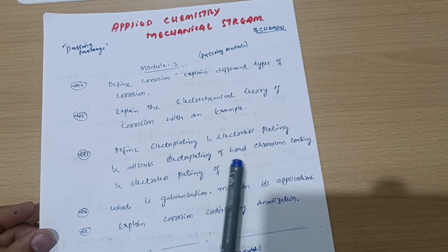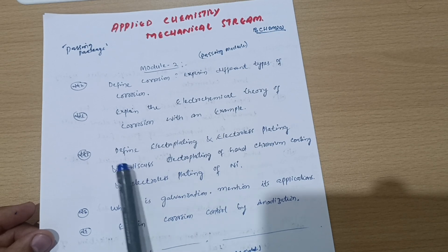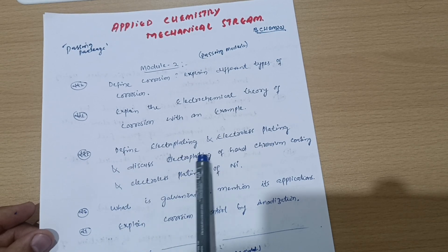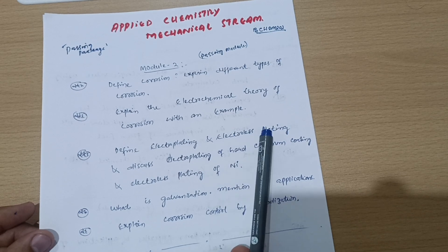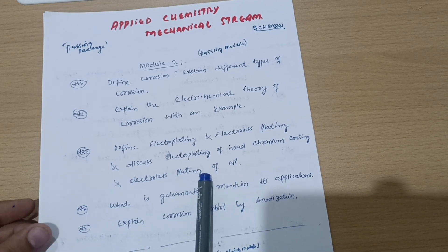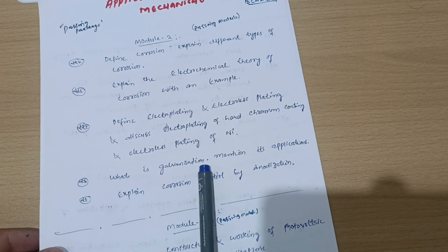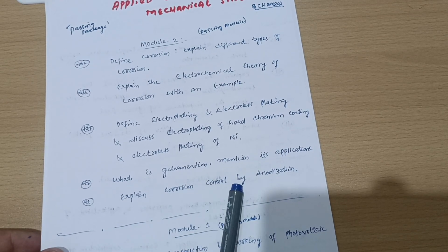Define electroplating and electroless plating and discuss electroplating of hard chromium coating and electroless plating of nickel. This may be a separate question: define electroplating and discuss electroplating of hard chromium, and sometimes define electroless plating and explain the electroless plating of nickel.